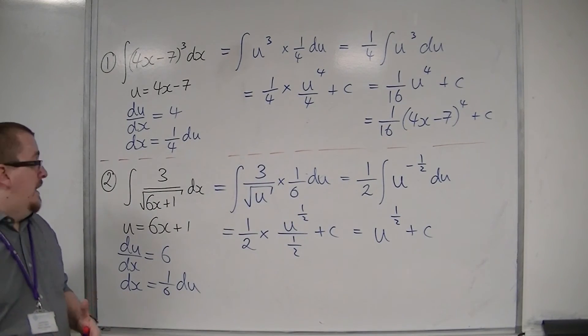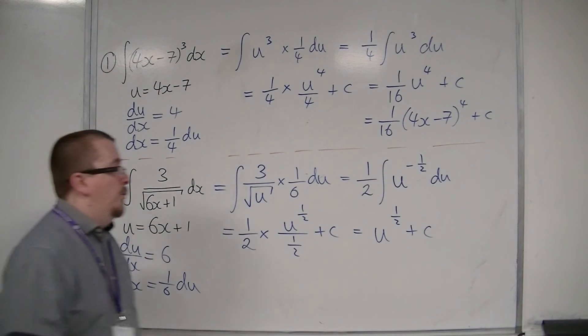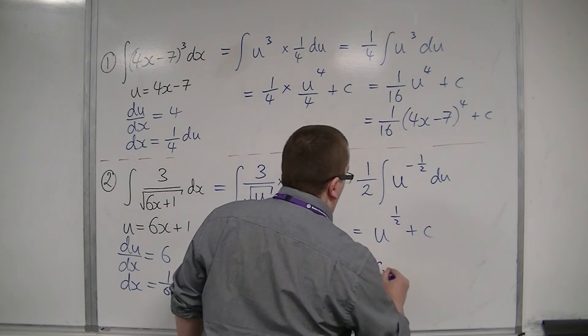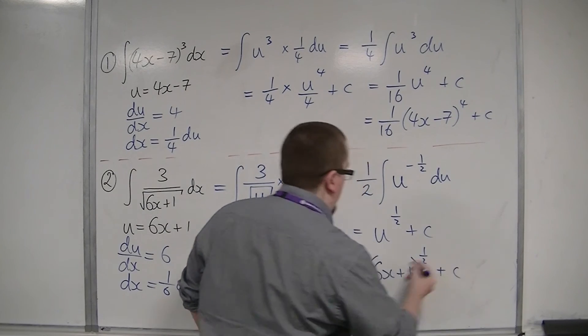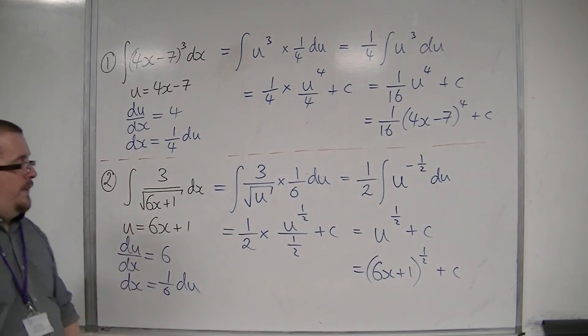And I don't want to leave it like that, so I bring back in the 6x plus 1. So this is 6x plus 1, to the half, plus c. And that is the integral of this.